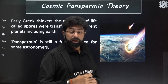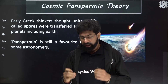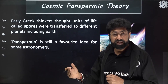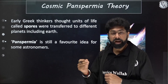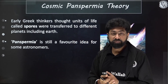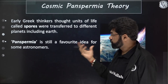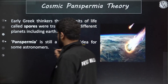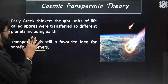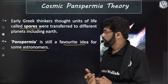The Cosmic Panspermia theory says life came from outer space, from other planets, in the form of spores. Some scientists from MIT and CCMB Hyderabad have found bacteria existing in the upper stratosphere dependent only on hydrogen, suggesting life from outer space is possible. This is a favorite idea for some astronomers, but we don't have strong experimental proof supporting it as much as chemical evolution.